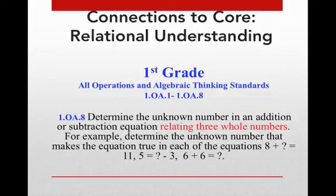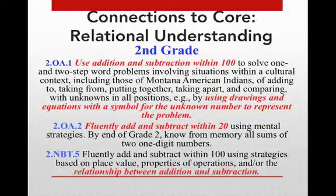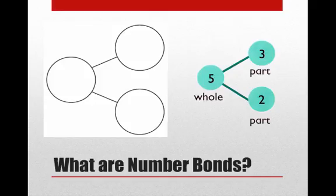You can see here I listed 1.OA.8 where they're determining that unknown whole number in an addition or subtraction equation. It could be a really powerful tool. And in second grade really helps build that addition and subtraction within a hundred equations with a symbol for the unknown number. I think these bonds really lend themselves to moving students eventually into fluency. So once they understand that relationship it leads into that fluency of memorizing our facts.